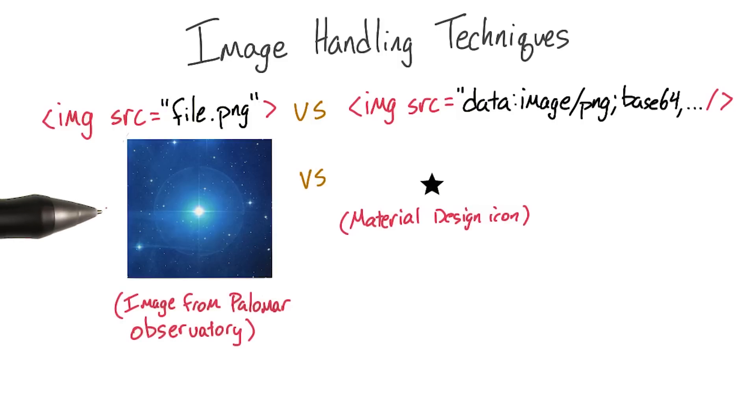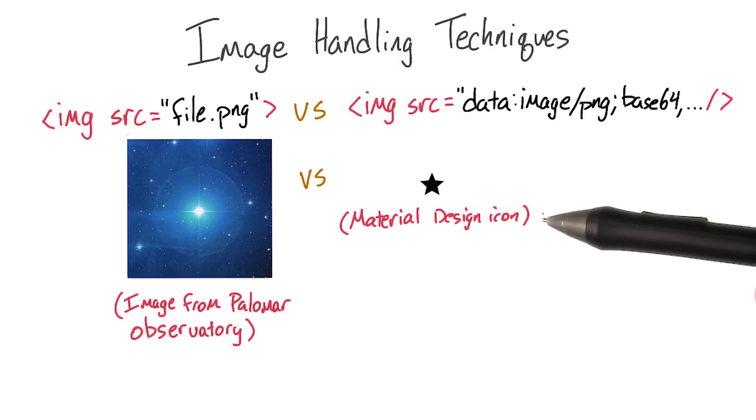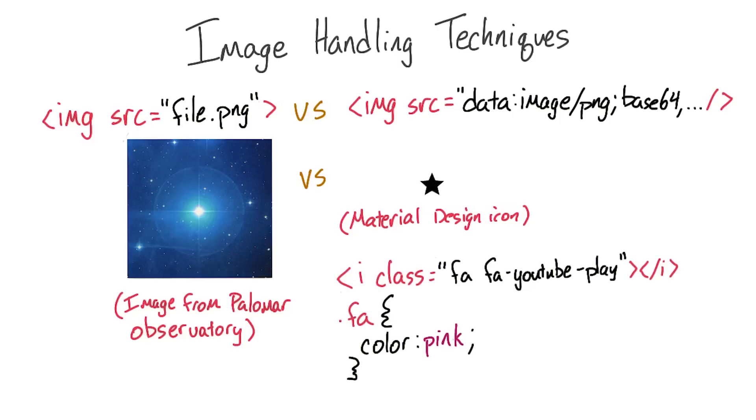You can use raster images like this picture of the star called Electra. Or you can use vector images like this star from the material design icon set. And then, of course, you can eschew images altogether and use font icons like font awesome, and then use CSS techniques for styling them.